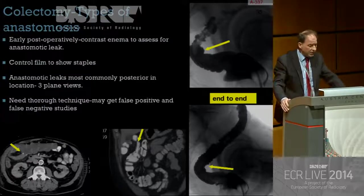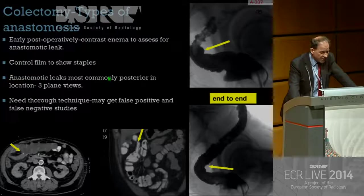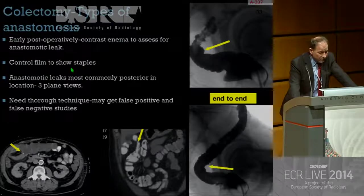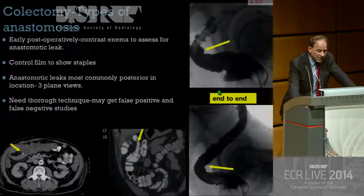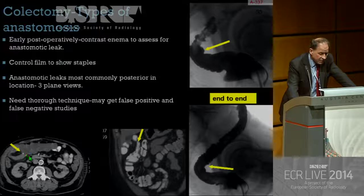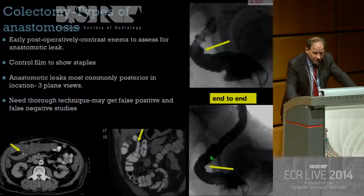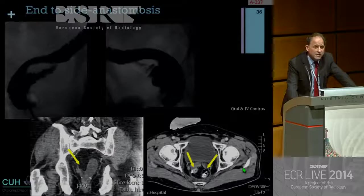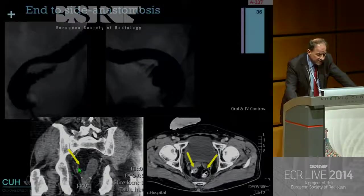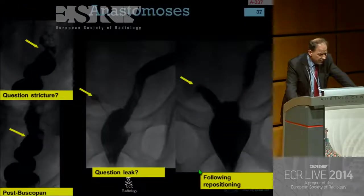For colectomy and various colonic resections, we usually perform contrast enemas following surgery. A control film beforehand is a good idea. Anastomotic leaks require three-plane views — many leaks are seen posteriorly so a good lateral view is essential. Examples include right hemicolectomy with a suture line on contrast enema and coronal CT. You must be careful of the end-to-side anastomosis — if unaware, you may mistake it for a leak. If unclear, call the surgeon.